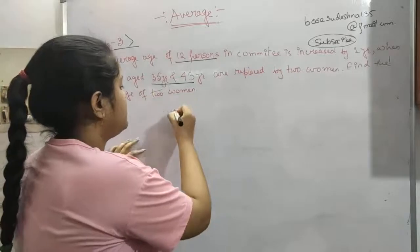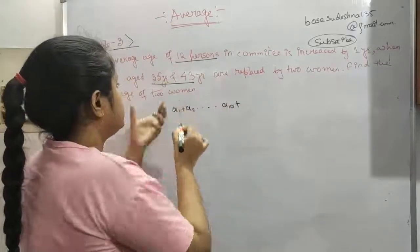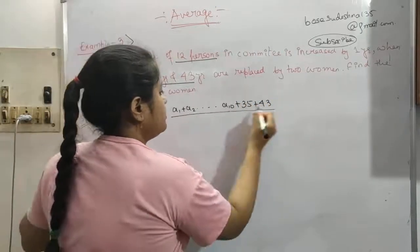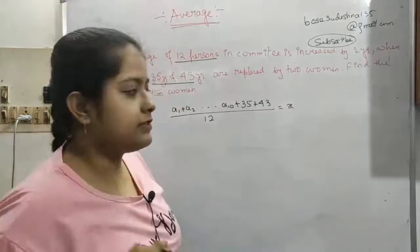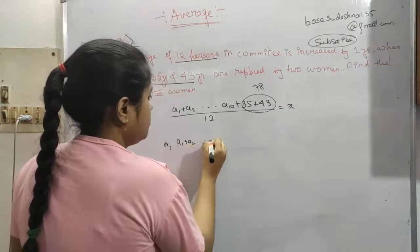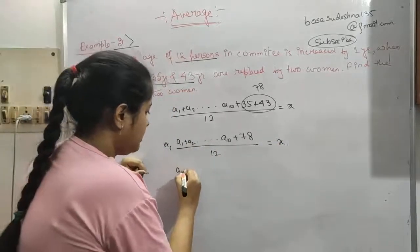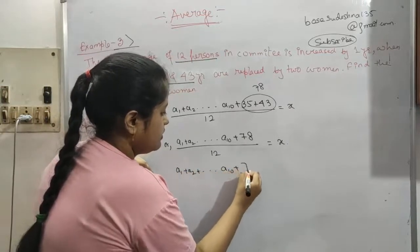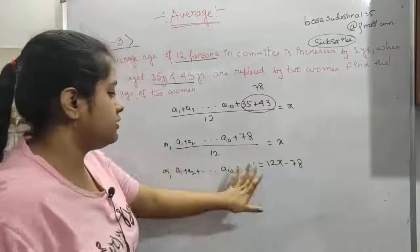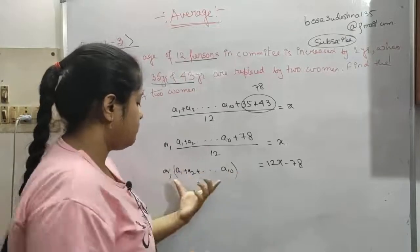The average age of 12 persons — let us say a1, a2, ... a10, and a11 and a12 are replaced. The 2 men are aged 35 and 43. So a1 + a2 + ... + a10 + 78 divided by 12 equals x. Multiplying out: a1 + a2 + ... + a10 + 78 = 12x, so the summation of a1 to a10 is 12x − 78.